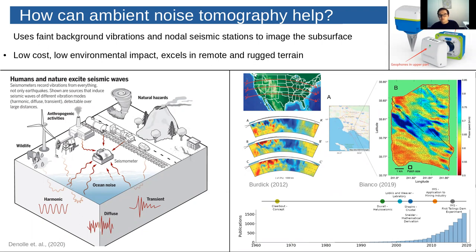The origin of the seismic noise we consider depends on its frequency content. At low frequencies, below one hertz, the seismic noise wavefield is dominated by the oceanic microseism, which results from the interaction of the ocean tide with the solid earth. Whereas at higher frequencies, above one hertz, anthropogenic activity dominates — sources such as trains, traffic, or industrial activity generate most of the seismic noise at these frequencies.